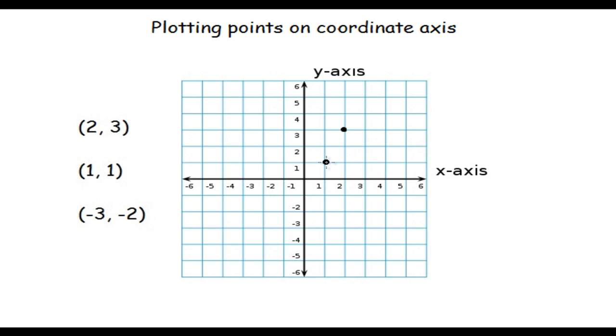So we plot the point here. Now we would like to plot the point (-3, -2) on the coordinate axis. -3 refers to the x-axis so it's -1, -2, -3 this line, and -2 refers to the negative y-axis that's -1 and -2 this one.